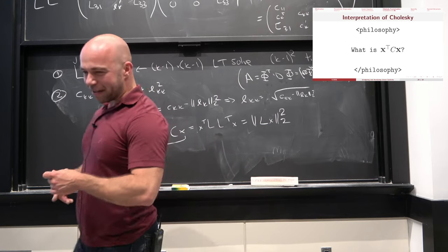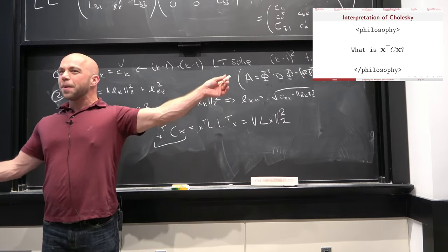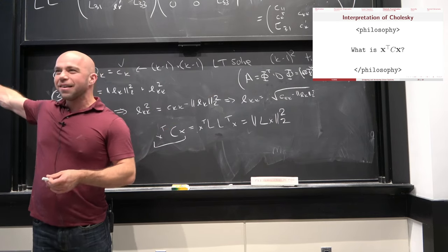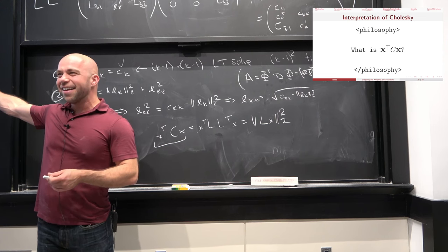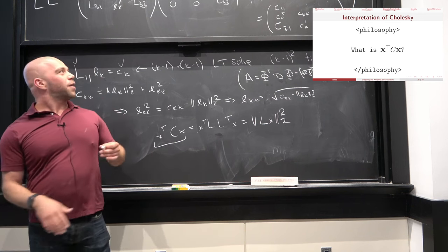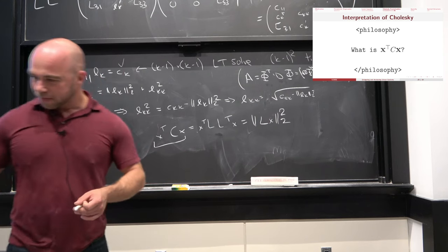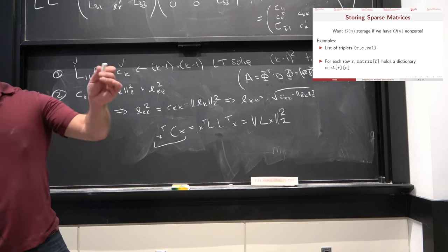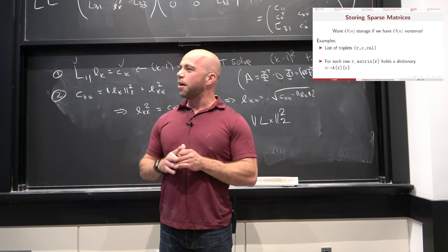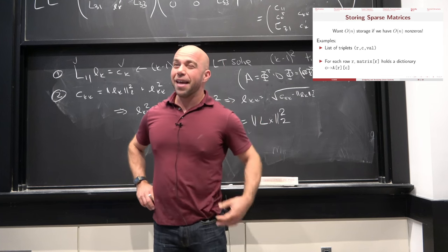To review our story: we started with the least squares problem and showed that for problems with symmetric positive definite structure, we can do better than generic Gaussian elimination. We can use Cholesky factorization to exploit additional structure in our matrix. In particular, LDLT is a numerically stable way to do this. Let me give you some pointers toward other specially structured matrices where this kind of reasoning applies.